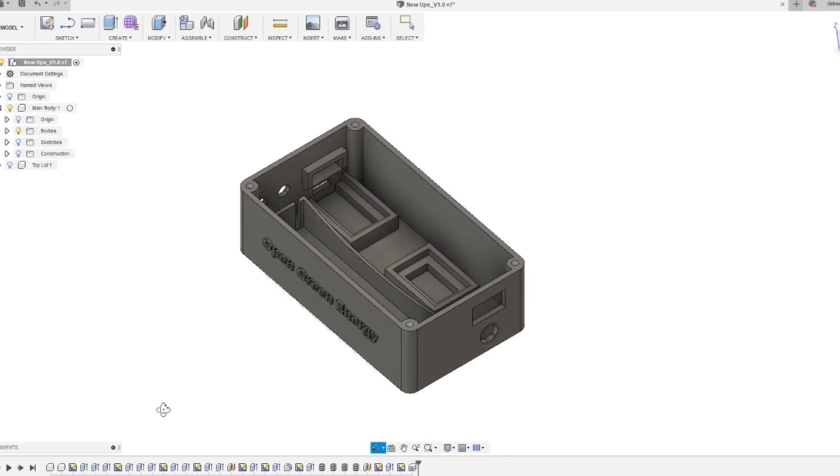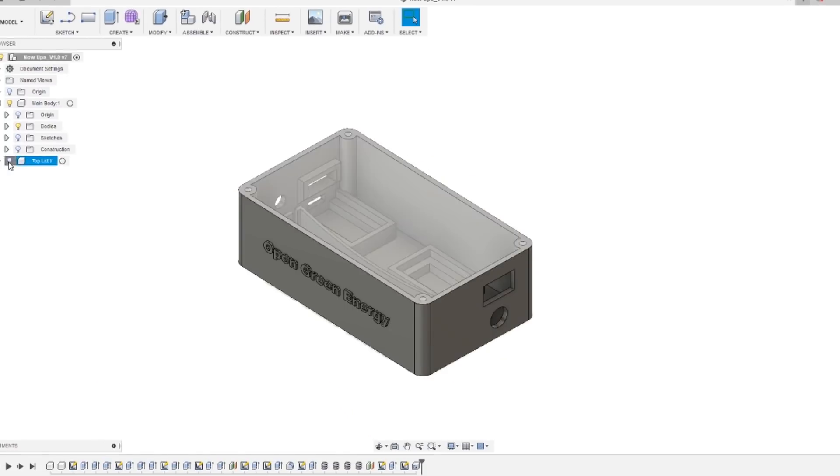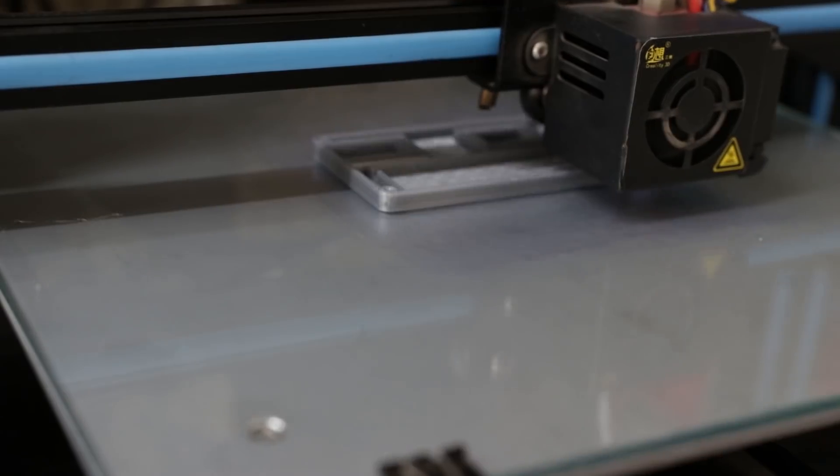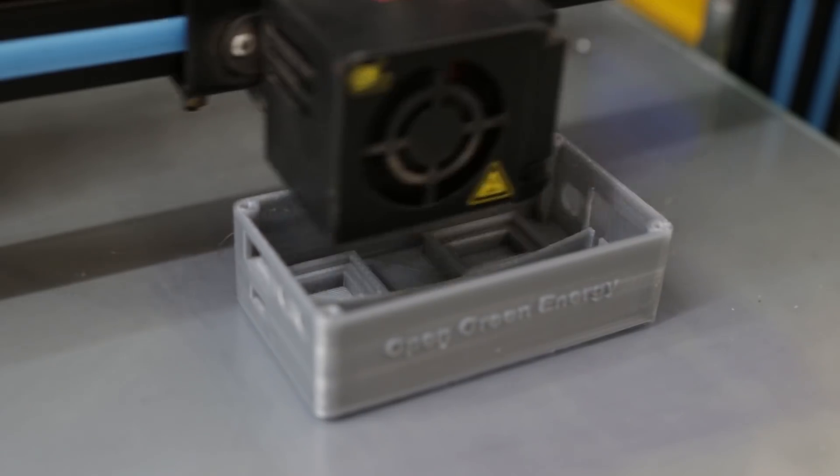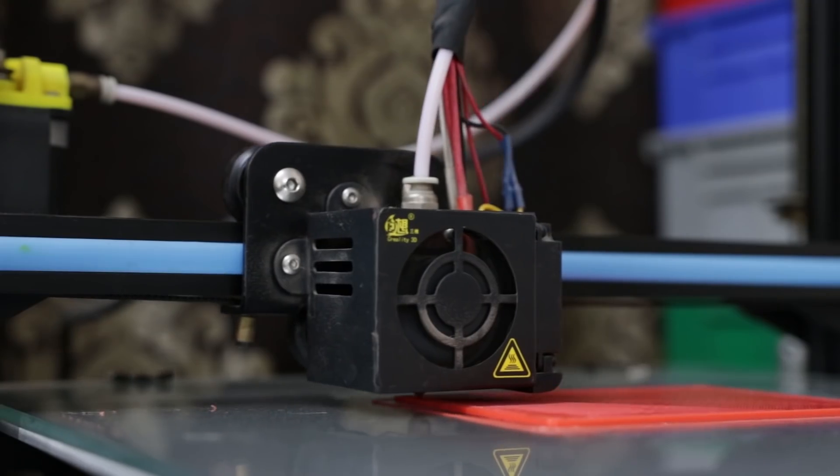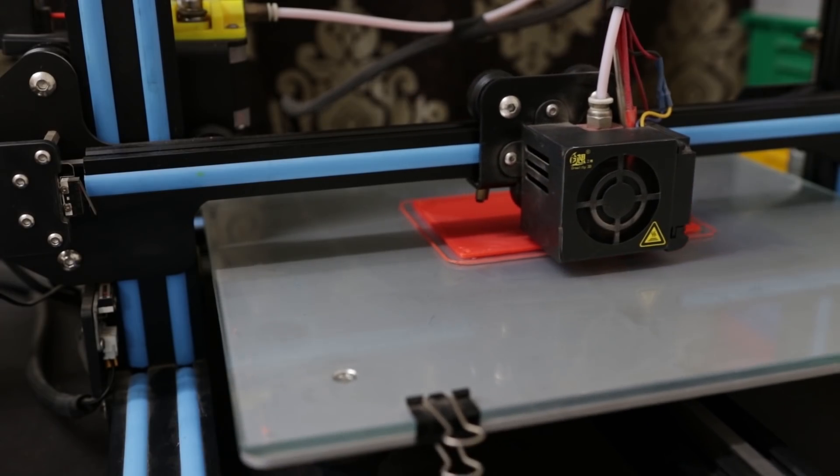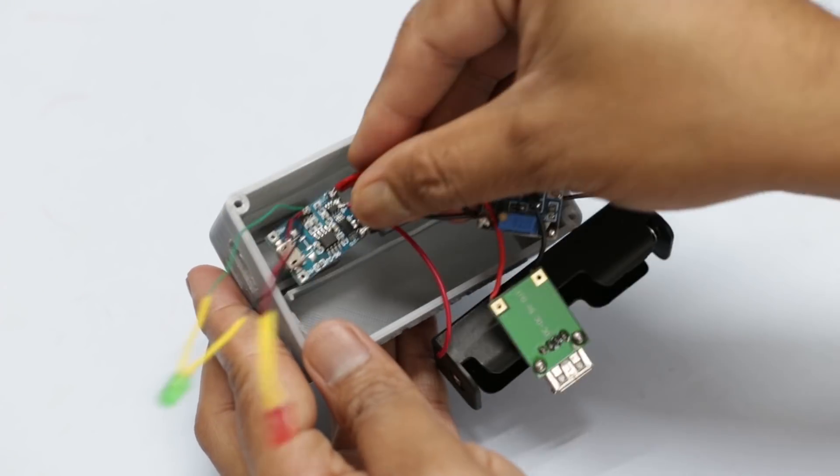I have designed an enclosure for this mini UPS using Autodesk Fusion 360. Then I printed the enclosure using my Creality CR-10S 3D printer. You can download the STL files from Thingiverse. The link is given in video description.